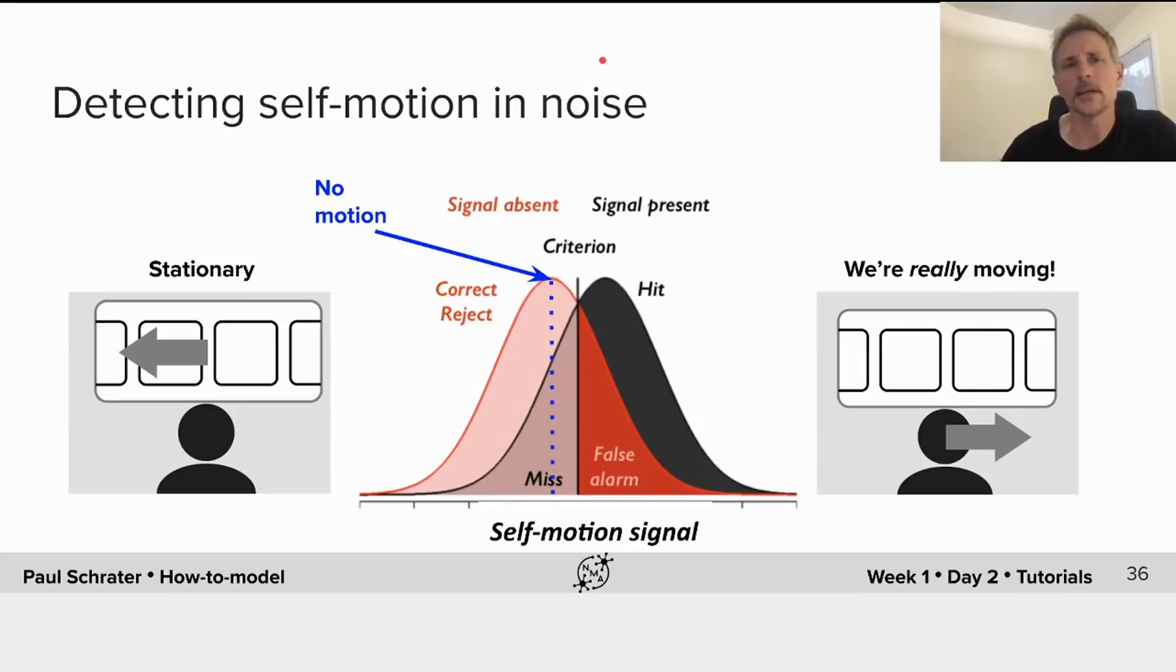The second ingredient comes from appreciating that the brain has to distinguish when we're stationary from when we're really moving, given that very noisy vestibular signal. When we're not moving, the mean of that vestibular signal might be where this blue line is. On a moment-by-moment basis, that signal is fluctuating such that it would form this red distribution. When we're actually moving, but moving quite slowly, you'd have a different mean centered at this black distribution, and the moment-by-moment value of the motion would again be distributed.